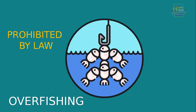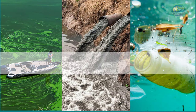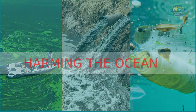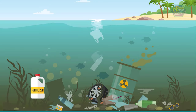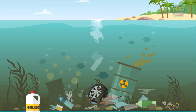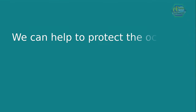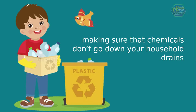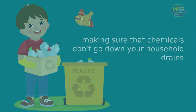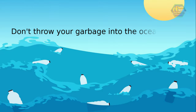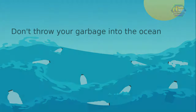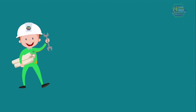Pollution is also harming the marine ecosystem. Pollutants such as fertilizers, household products, and even oil spills ruin the beauty of the ocean. There are many simple things you can do to help protect the ocean, like recycling and making sure that chemicals don't go down your household drains. Don't throw your garbage into the ocean, because fish eat it and can be poisoned by it.